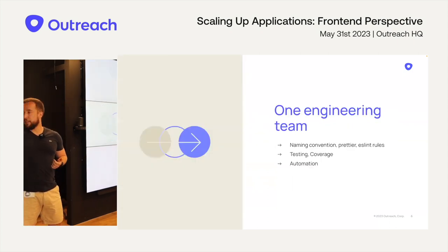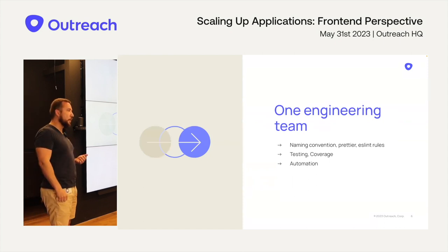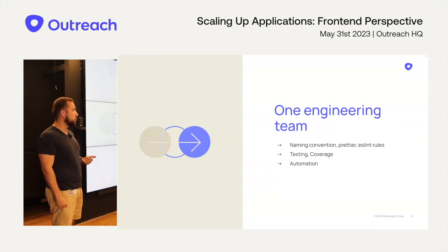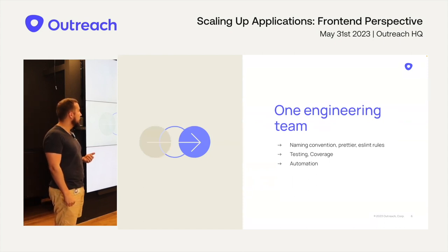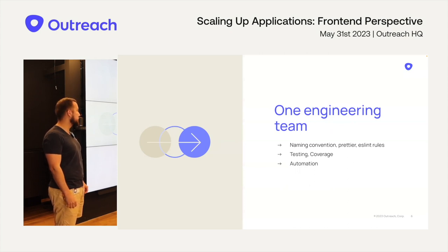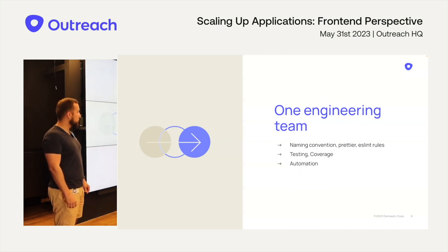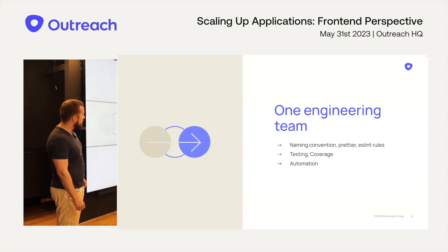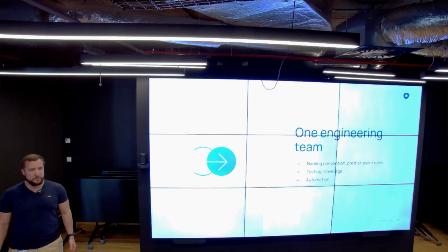When it starts to grow and you have another friend who wants to join as an engineer, or you start hiring more engineers, you should start focusing and investing time into patterns — like how to write code, how to format files, how to test — and provide as much automation as possible to speed up the process and simplify the most repetitive tasks.